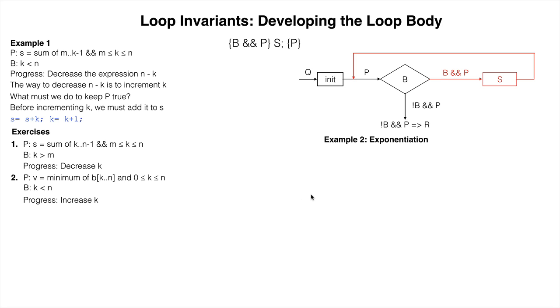Next, we look at a loop to calculate B to the power of C, for C is at least zero. Here is the relevant information. P is: B to the power of C equals Z times X to the power of Y, and Y is at least zero. B is: zero is less than Y.